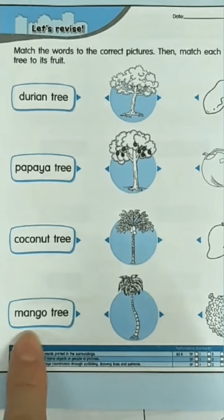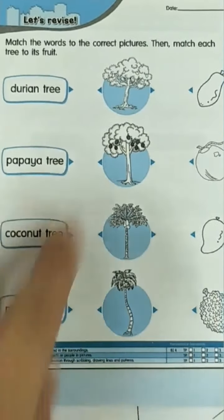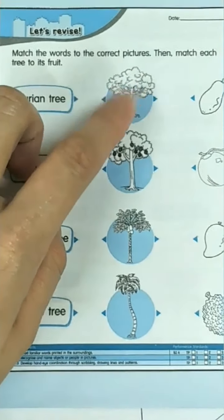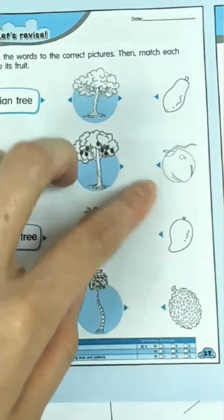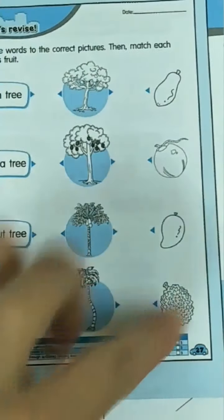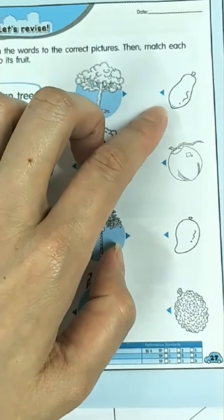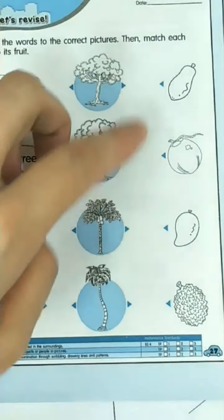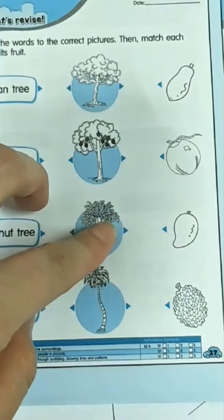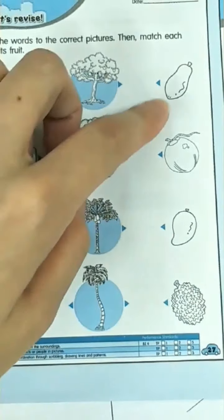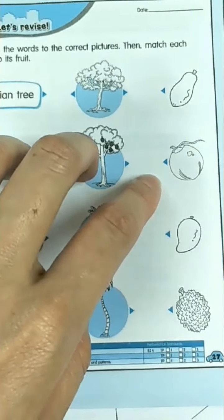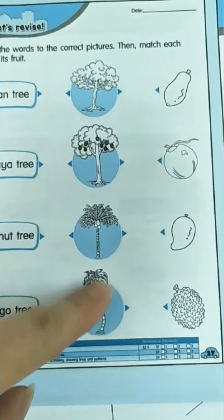Where is the mango tree? This one is a mango tree. Alright, let's look into the fruits. Do you know what is this? This is a papaya. It's a papaya. Papaya fruit. What is this? It's a coconut. It's a coconut fruit. Coconut.